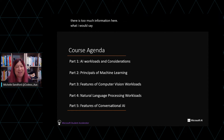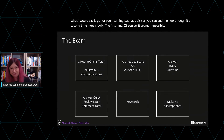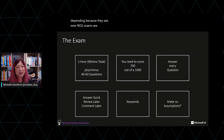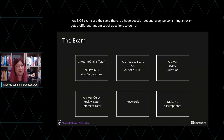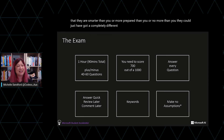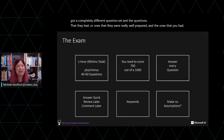I would say go through your learning path as quickly as you can and then go through it a second time more slowly — the first time, of course, it seems impossible. You can count on having about an hour to do your exam. No two exams are the same; there is a huge question set and every person sitting an exam gets a different random set of questions. So do not feel worried if you do not pass and other people you know who did the exam on the same day passed it — it doesn't mean they are smarter or more prepared. They could just have got a completely different question set.